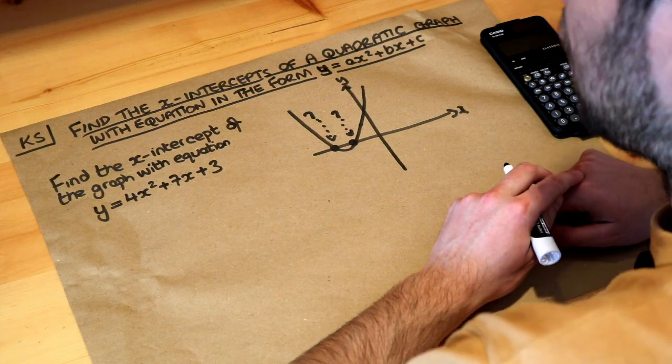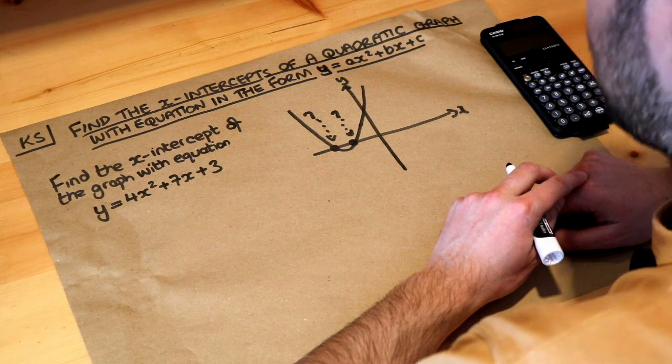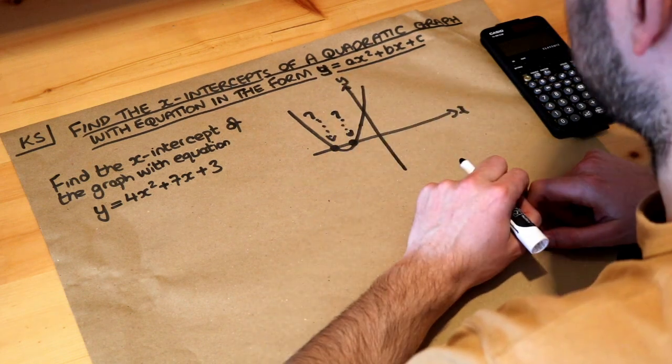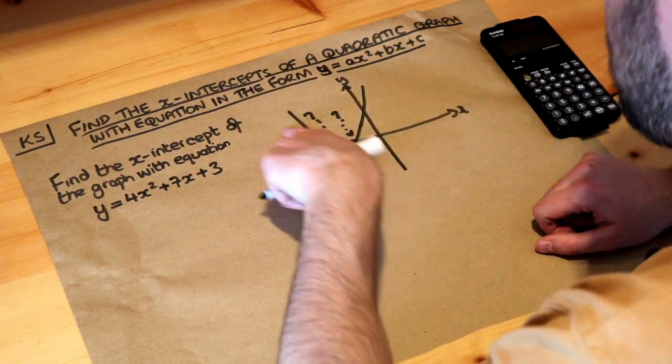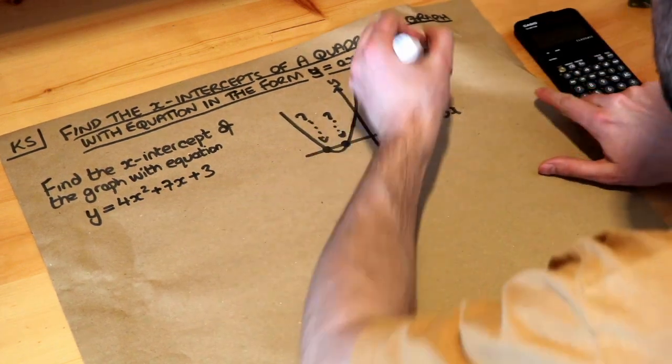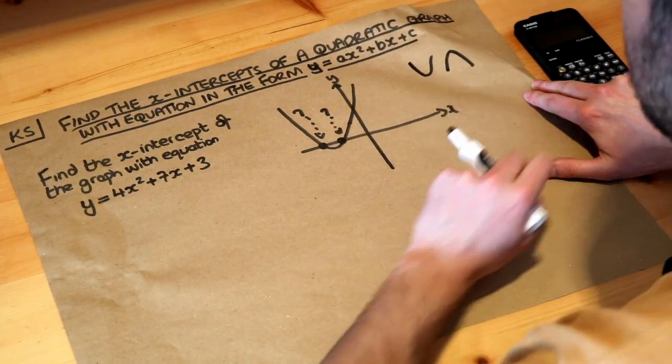Hello and welcome to this Dr. Ross Mass key skill video on finding the x-intercept of a quadratic graph with equation in the form y equals ax squared plus bx plus c. Now we've got a quadratic graph, we're sketching this and we get this shape here. Remember quadratic graphs either have a U shape or an upside down U shape, so one of those two shapes there.